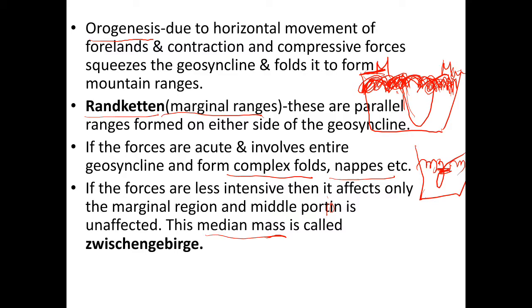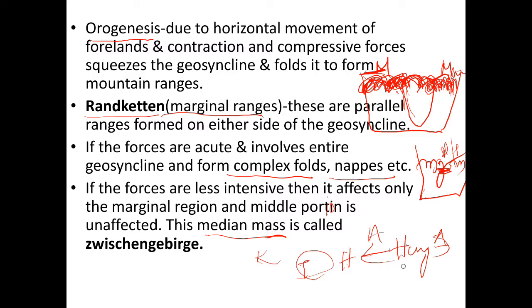The Zwischenberge (median mass) can take the form of a plain, plateau, or sea. For example, the Tibetan Plateau lies between the Kunlun Mountains and the Himalayas. The Hungarian Plain, between the Alps, is an example of a median plain. The Mediterranean Sea, located between the Atlas Mountains in Africa and the Alps in Europe, is an example of a median sea.